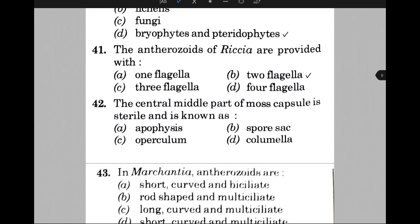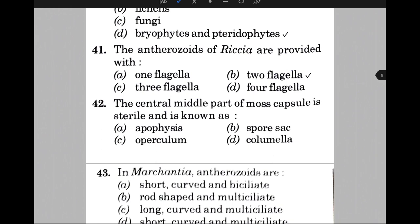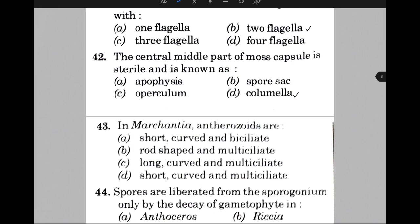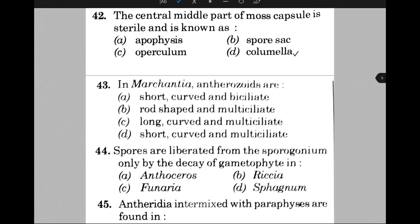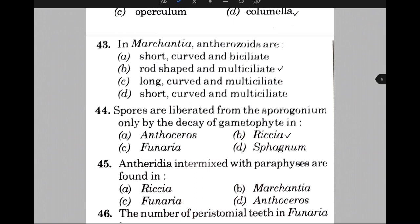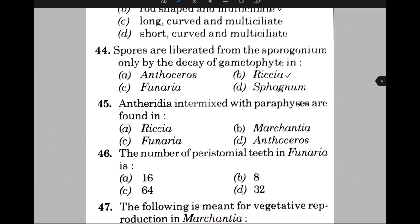The central middle part of moss capsule is sterile and is known as — the answer is D, that is columella. In Marchantia, antherozoids are — the answer is B, that is rod-shaped and multi-ciliate. Spores are liberated from sporogonium only by decay of gametophyte in — the answer is B, that is Riccia. Antherozoids intermixed with paraphyses are found in — the answer is option C, that is Funaria.